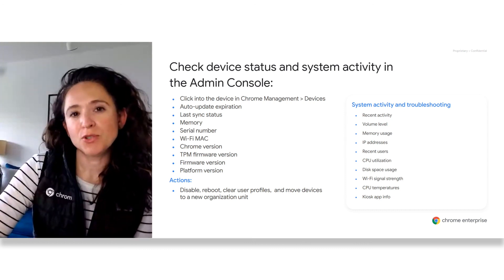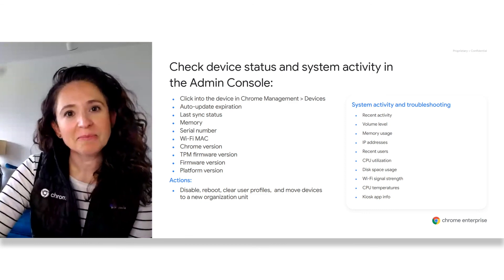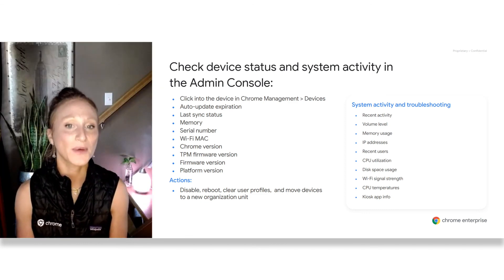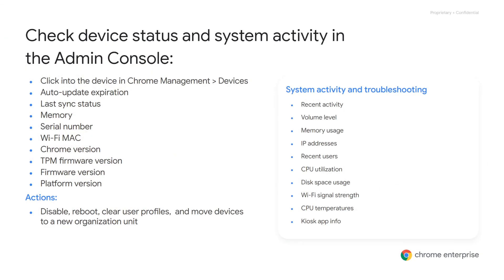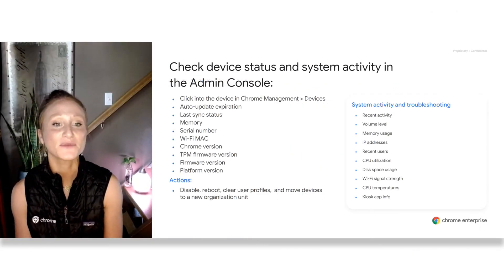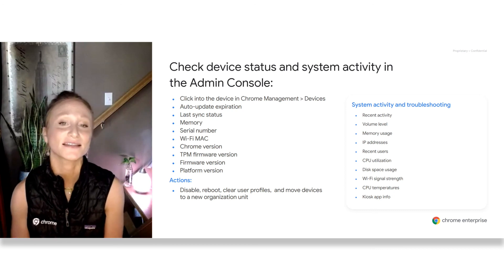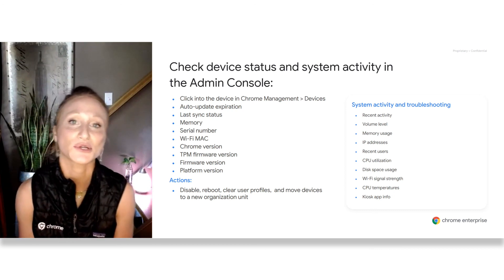Depending on the deployment mode, admins have access to data about a device and user settings that can be provided to support in the initial case. Common examples include grabbing the IP address and MAC address, which are key to diagnosing Wi-Fi connection issues. You can also check the auto-update expiration date if devices stop receiving security updates. Admins may also be able to disable, reboot, clear user profiles, and move devices to a new OU as needed to isolate issues and continue troubleshooting.